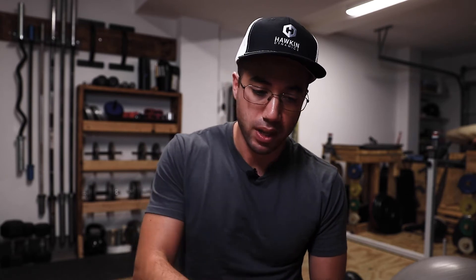That means the bones are becoming more brittle and less resilient to impact forces. Sarcopenia is a less known term. A lot of people have heard osteoporosis and osteopenia, but sarcopenia is the loss of muscle mass and function, or the loss of strength with age.